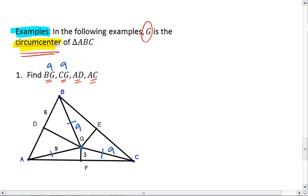Also, if we are dealing with the circumcenter, we know that we have midpoints. So if DB is 6, then DA is also 6.